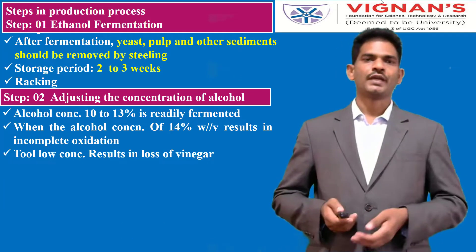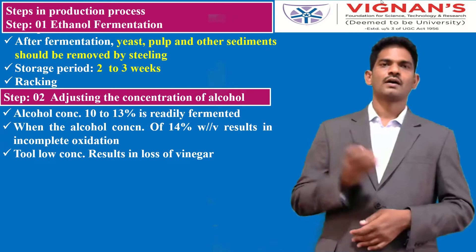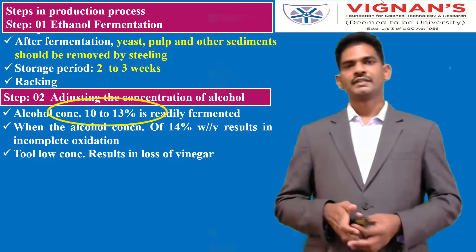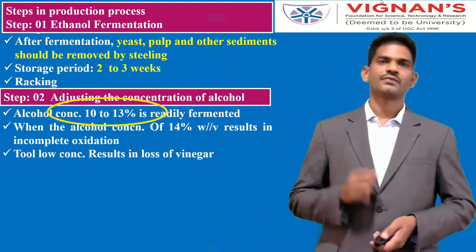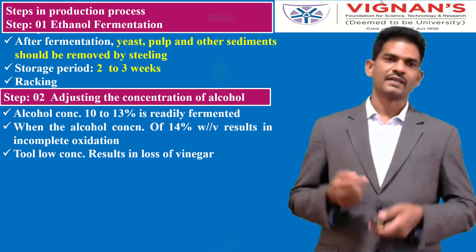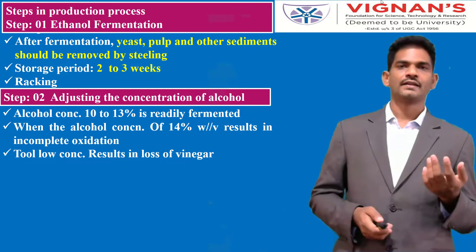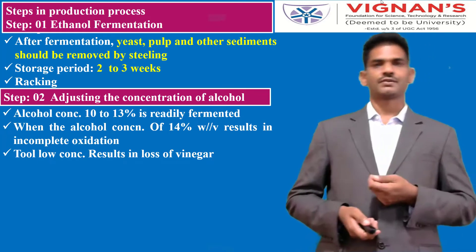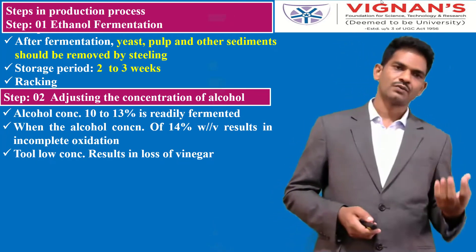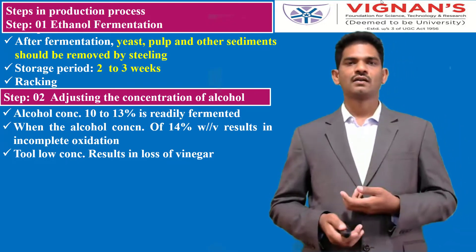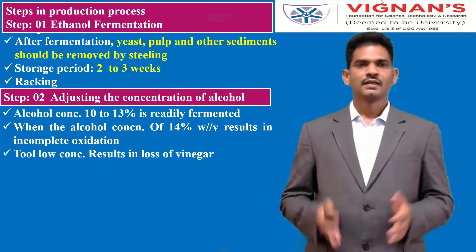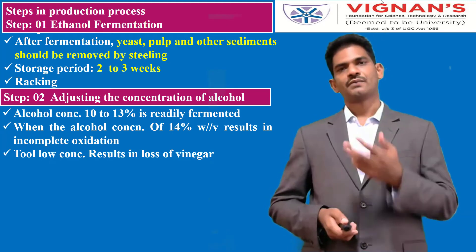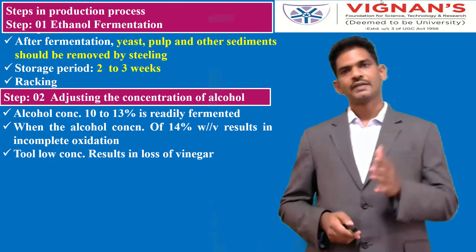Step two is adjusting the concentration of alcohol. An alcohol concentration of 10 to 13 percent is readily fermented — this is the optimized range for producing acetic acid by bacteria. If the alcohol concentration increases beyond 14 percent, the result is incomplete oxidation. If the concentration is too low, the result is a loss of vinegar yield. That is why this is a very critical stage; you must adjust the concentration of alcohol, preferably to 10 to 13 percent.